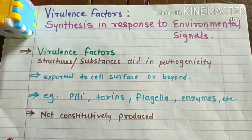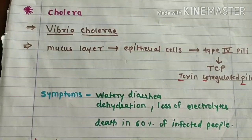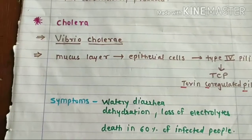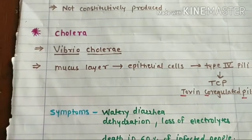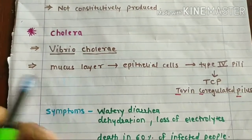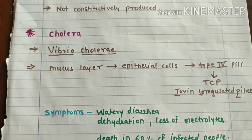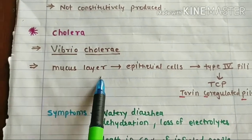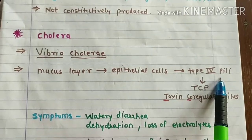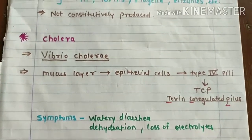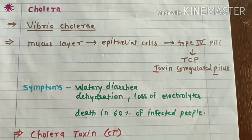Let's take an example of one very well-known disease: cholera. Cholera is caused by Vibrio cholerae. Upon infection — upon entry — this Vibrio cholerae in the intestine passes the mucus layer. In the intestine there is a mucus layer, and after that mucus layer there are epithelial cells. It swims through the mucus layer and goes to the epithelial cell and establishes itself there with the help of type 4 pili. The type 4 pili are helpful for attachment to the epithelial cells, and are also known as TCP — toxin co-regulated pili.